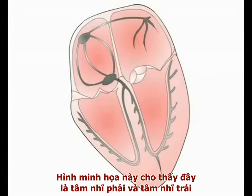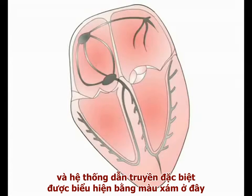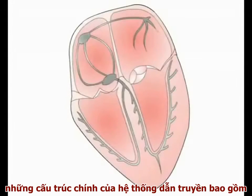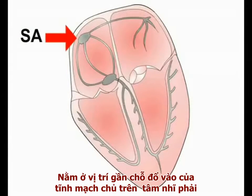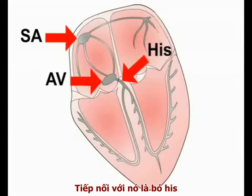The schematic shows the right and left atria, the right and left ventricles, and the specialised cardiac conducting system seen here in grey. You will remember from anatomy that the main components of the conducting system are the sinoatrial, or SA, node, situated near the entry of the superior vena cava into the right atrium, and the atrioventricular, or AV, node, leading into the bundle of His.